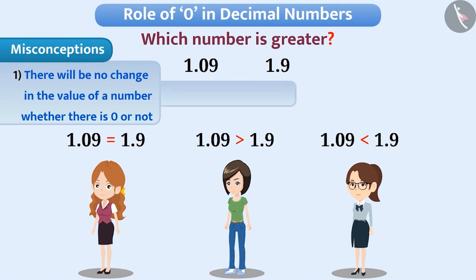And Meena is having a misconception that there are more digits in 1.09. Hence, 1.09 is greater than 1.9. Here, Mitali's understanding is correct.